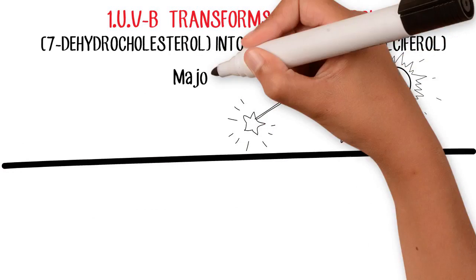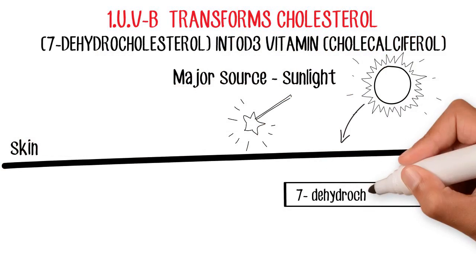1. UVB transforms cholesterol, 7-dehydrocholesterol, into D3 vitamin, cholecalciferol.